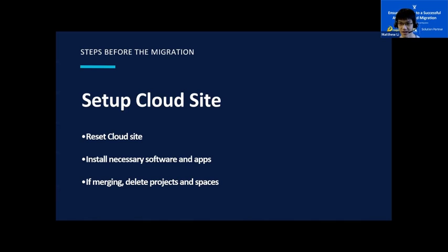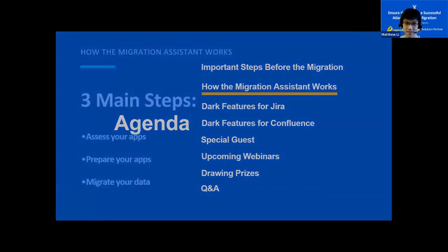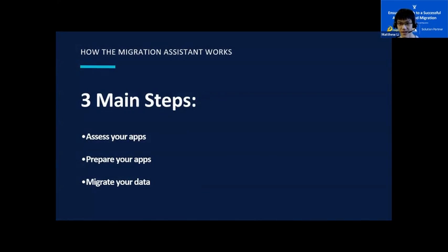Install the necessary software and apps onto your cloud instance. If you're merging with an existing cloud site, you need to delete your projects and spaces that were migrated from a test migration. Now I'll cover how the migration assistant works — this was covered in our previous webinar, but I'll explain how it works again. There are three main steps: assess your apps, prepare your apps, and migrate your data. Each of these steps will be covered in more detail on the next slides.